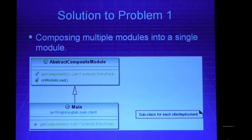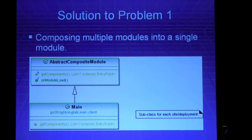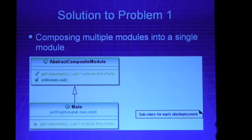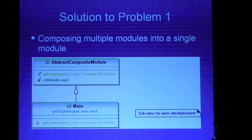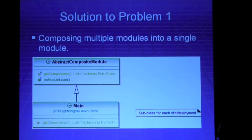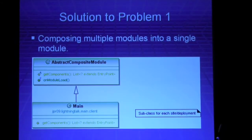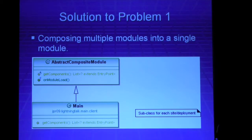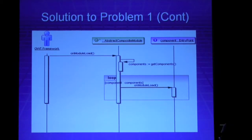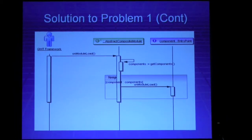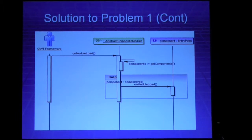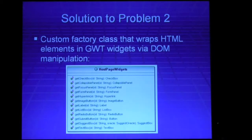To solve the first problem of loading multiple modules, what we do is quite simply use the composite pattern — essentially a module that consists of multiple modules. You call the main module and it basically delegates to the other modules one by one. It just looks through all the component modules and calls each module load one by one.